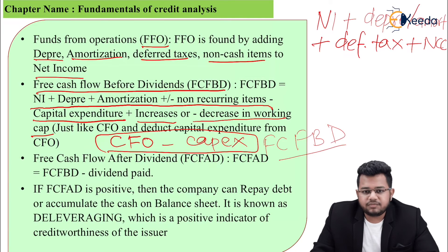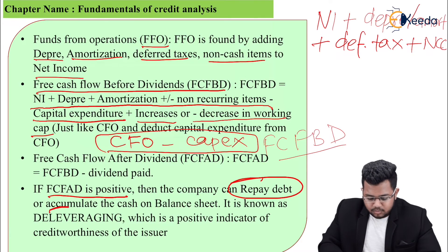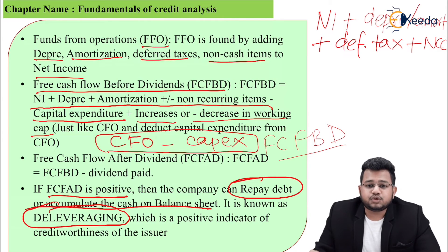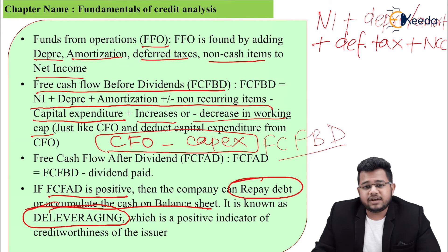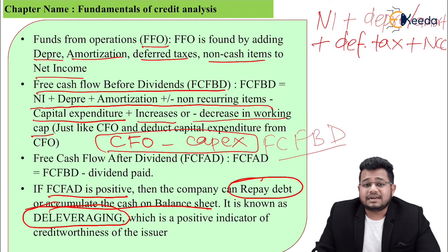FCFAD, free cash flow after dividends, is simply FCFBD minus dividends. If FCFAD is positive, the company can repay debt or accumulate cash on the balance sheet — this is called de-leveraging, which is a positive indicator of credit worthiness. Basically, after earning income, paying interest to debt holders, and paying dividends to shareholders, if cash still remains, the company can repay debt holders or keep that cash safe. Either way, both outcomes are beneficial for debt holders.